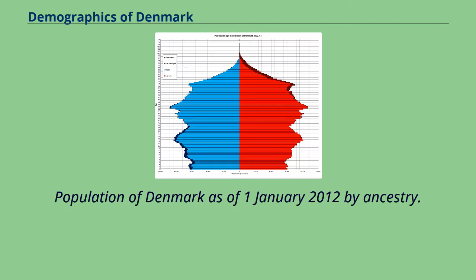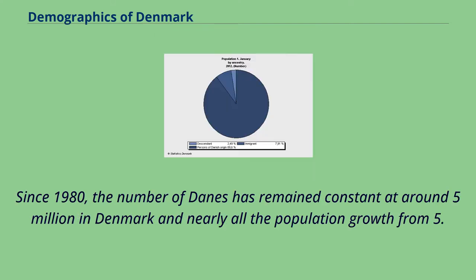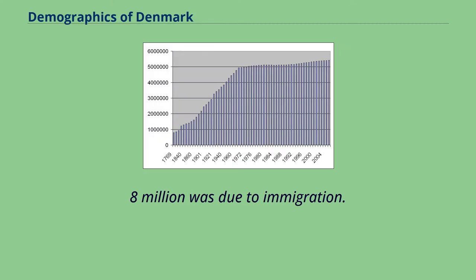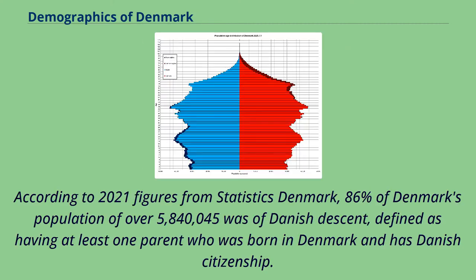As of January 1st 2012, by ancestry, since 1980 the number of Danes has remained constant at around 5 million in Denmark. Nearly all the population growth — from 5.1 up to the 2018 total of 5.8 million — was due to immigration. According to 2021 figures from Statistics Denmark, 86 percent of Denmark's population of over 5 million 840,045 was of Danish descent.